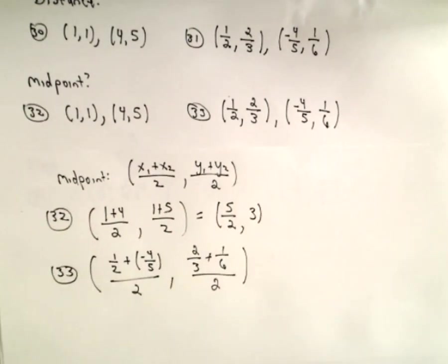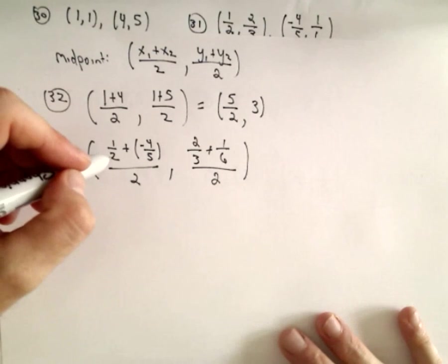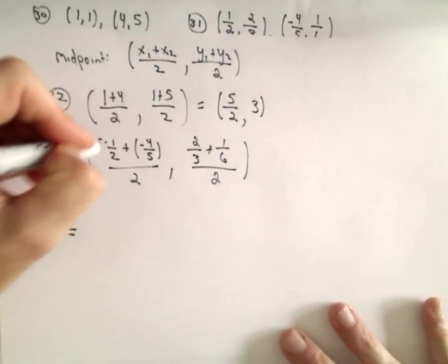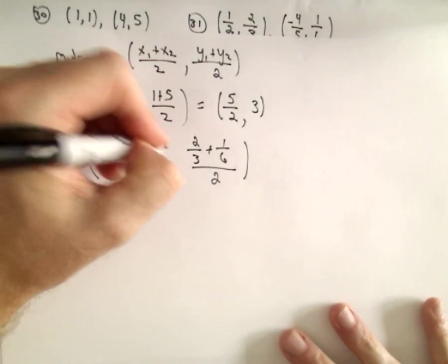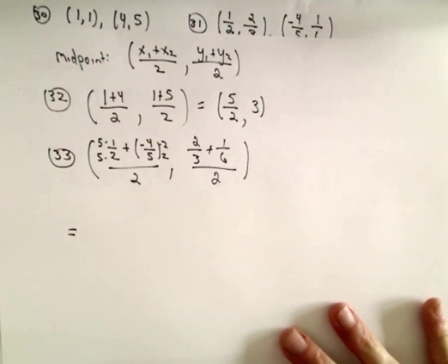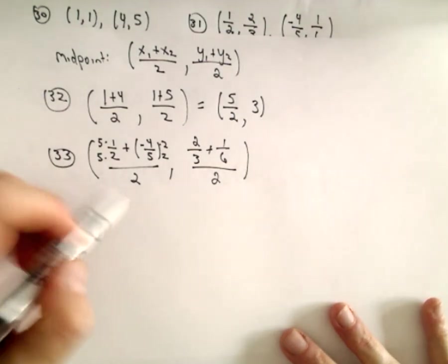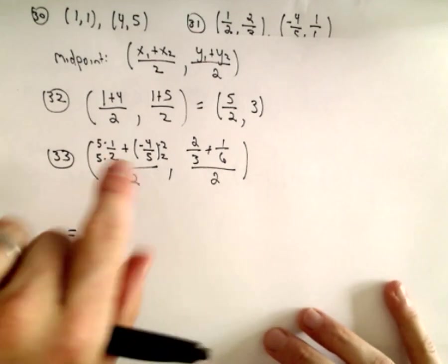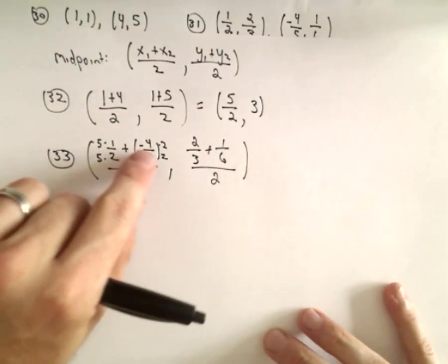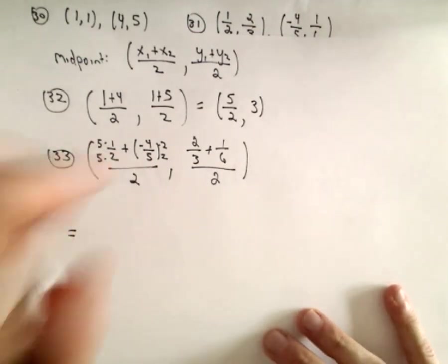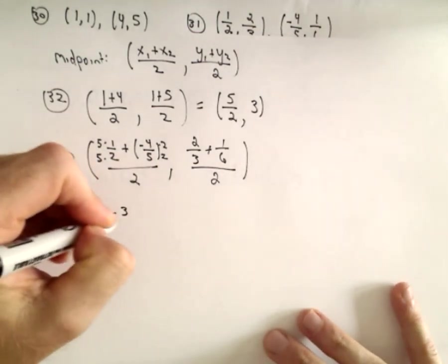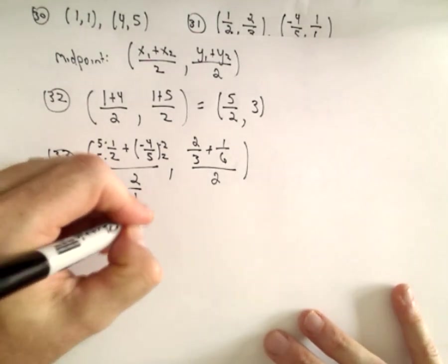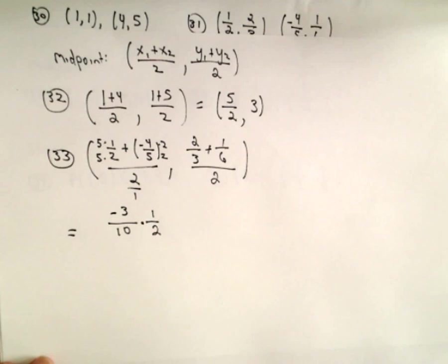So again, just a little bit of fraction stuff. So 1 half plus negative 4 fifths, well, what's that going to give us? We can multiply top and bottom of the first fraction by 5, top and bottom of the second one by 2. We almost just did this a second ago. So you could also multiply by the least common multiple of the denominators, another way to do it. So we've got 5 plus we would have negative 8, or 5 minus 8. That'll give us negative 3 over 10. That's all being divided by 2 over 1, which we can write as, we can flip and multiply and make it 1 half.